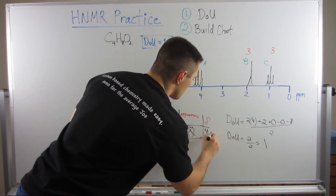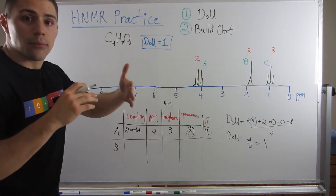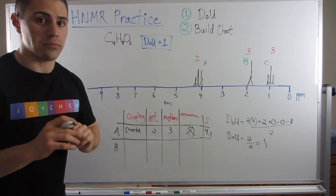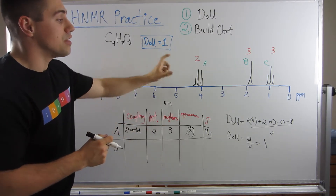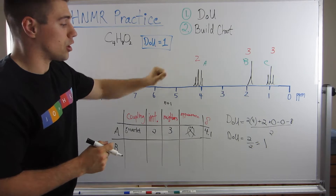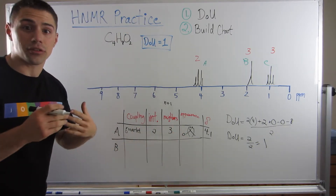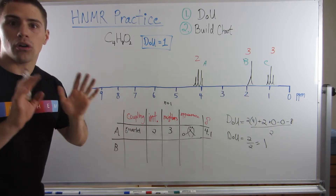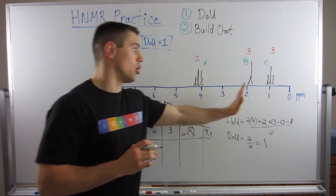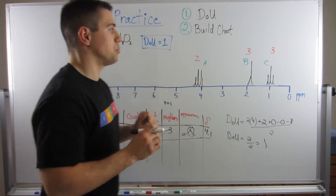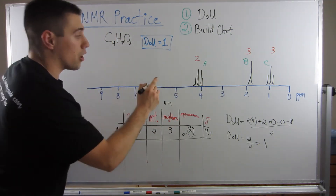You should always have a chemical shift chart handy when doing these problems. A chemical shift of 4.1 suggests proximity to an oxygen — either an ether or next to an alcohol. That's why this peak is so far downfield compared to the other two.